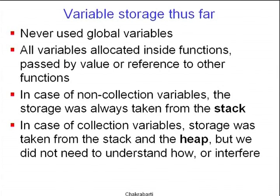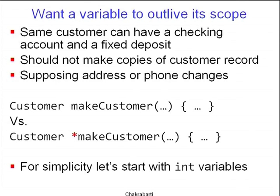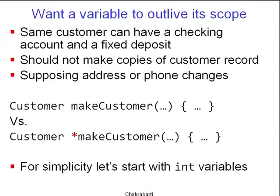We didn't need to understand how or interfere with that process. But why do we need to understand memory management? The reason is that you may sometimes want a variable to outlive its scope. I gave a dangerous function that took a reference to an integer and passed it out. It's a perfectly legitimate thing to want — a variable that exits the scope of a function and goes to another, or is put in data structures. For example, the same customer can have a checking account and a fixed deposit in a bank, and we don't want to make multiple copies of the customer record.